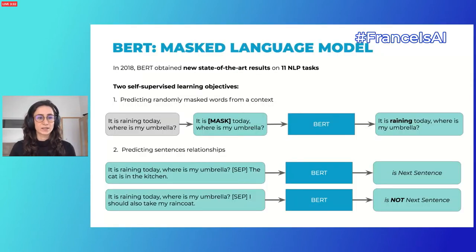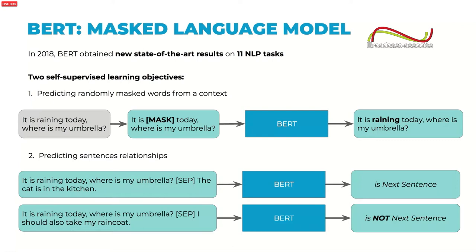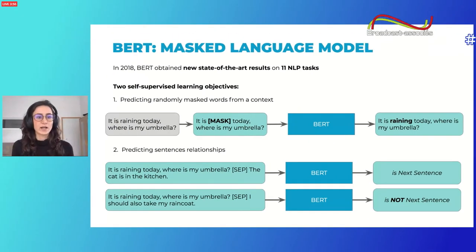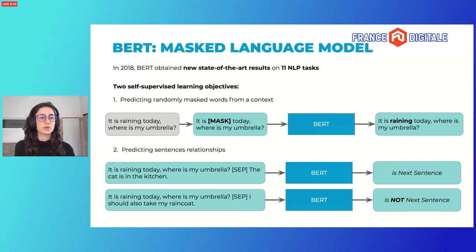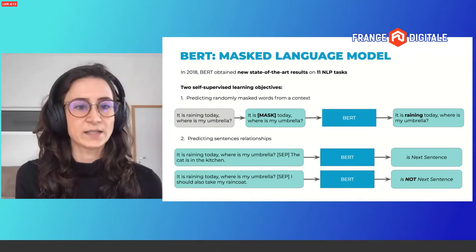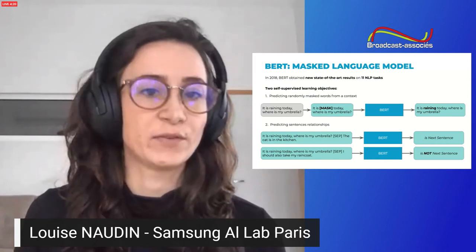Now I'm going to talk about self-supervision for text. In 2018, BERT put the spotlight on self-supervision by obtaining new state-of-the-art results on 11 NLP tasks. The two BERT self-supervised learning objectives were: first, to predict random masked words from a context — that's what gives it its name, masked language model. For example, 'It's raining today, where is my umbrella?' is raw text, and a few words will be masked, and the objective of BERT is to predict them. The second learning objective is next sentence prediction, to help the model understand sentence relationships — given two sentences, BERT predicts if the second follows the first or is random.